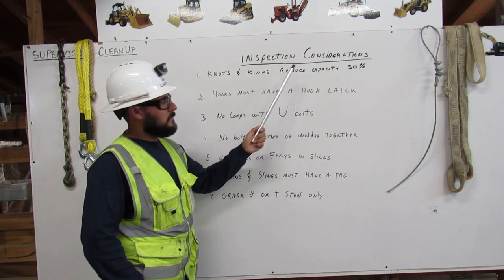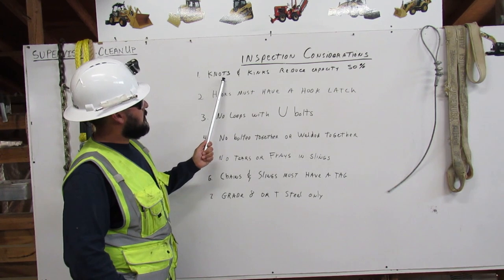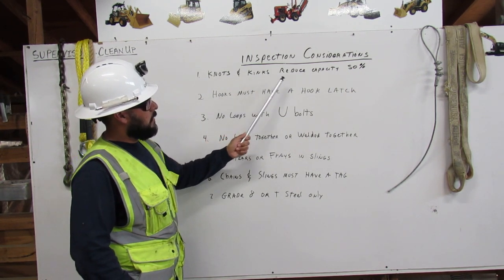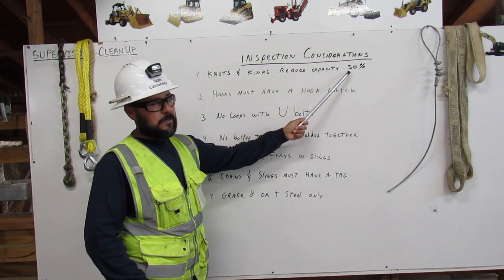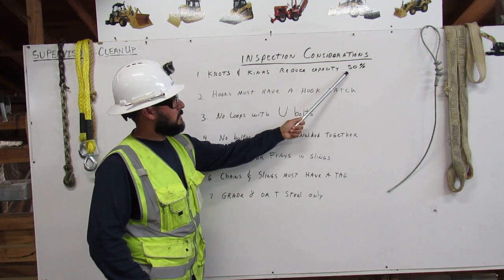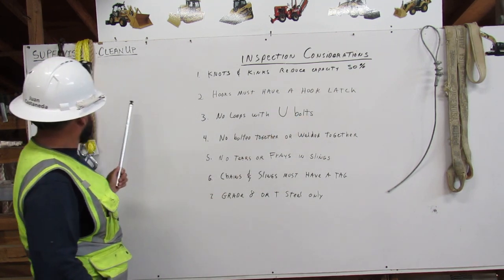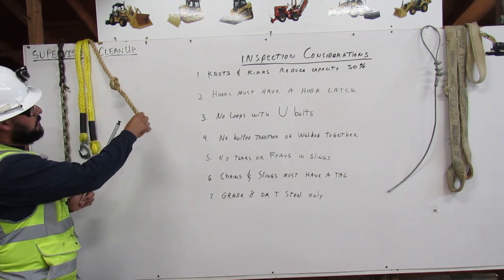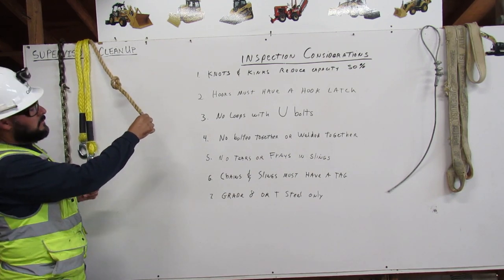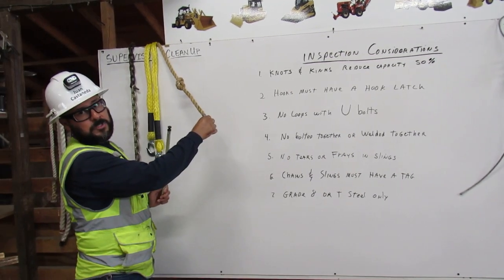Inspection considerations. One, knots and kinks reduce capacity 50%. Here is a rope with the knot. The rope is reduced by 50%.